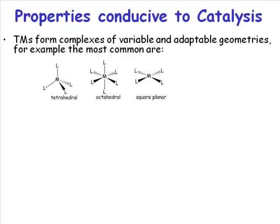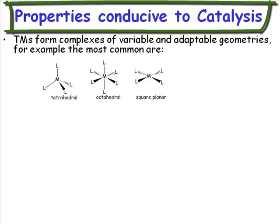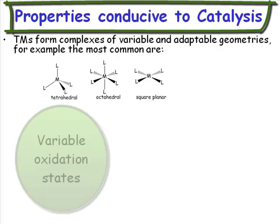Now why is it that transition metals are so conducive, so useful, so frequently found as catalysts? Well, one point is their ability to adopt variable oxidation states.